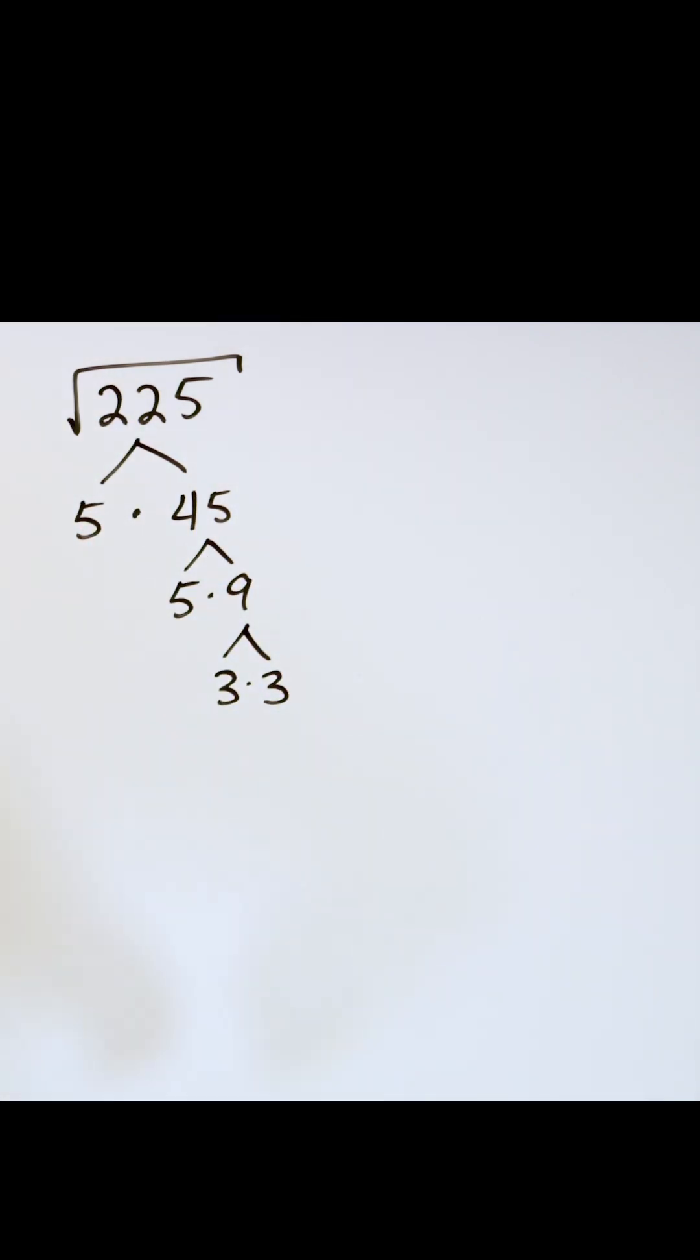So I've written a factor tree. Now I look for pairs. The three is a pair, and the fives here are a pair.